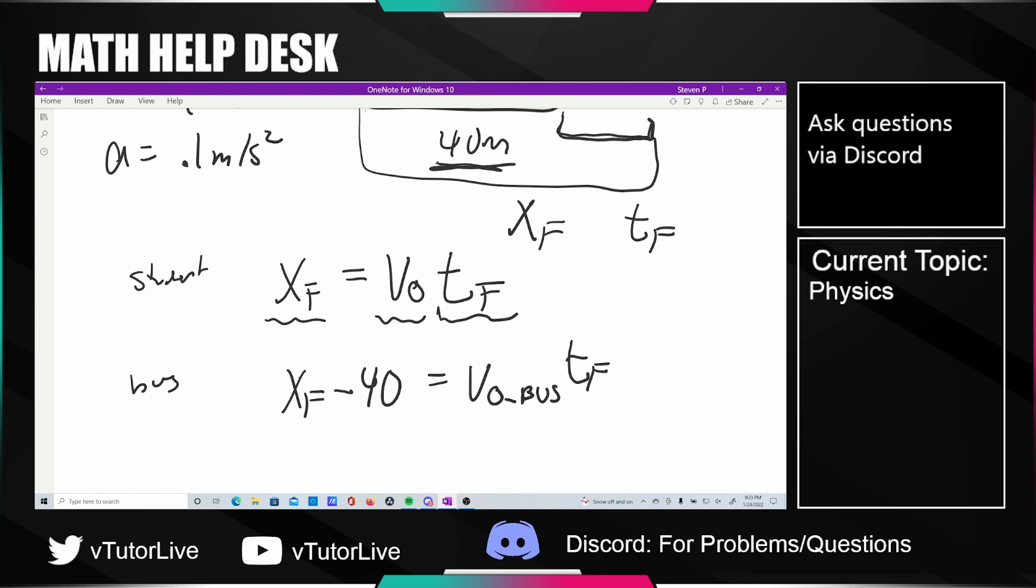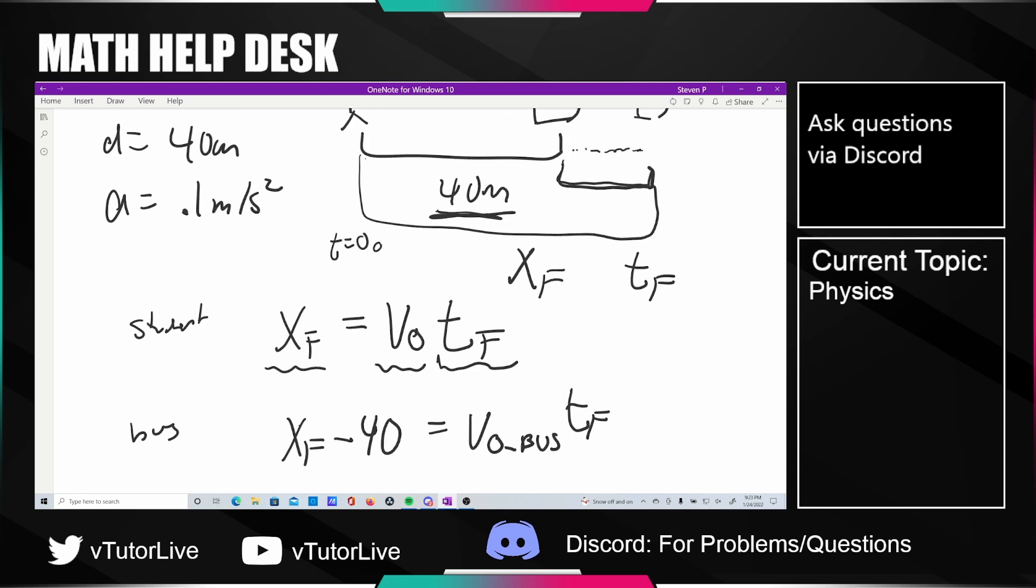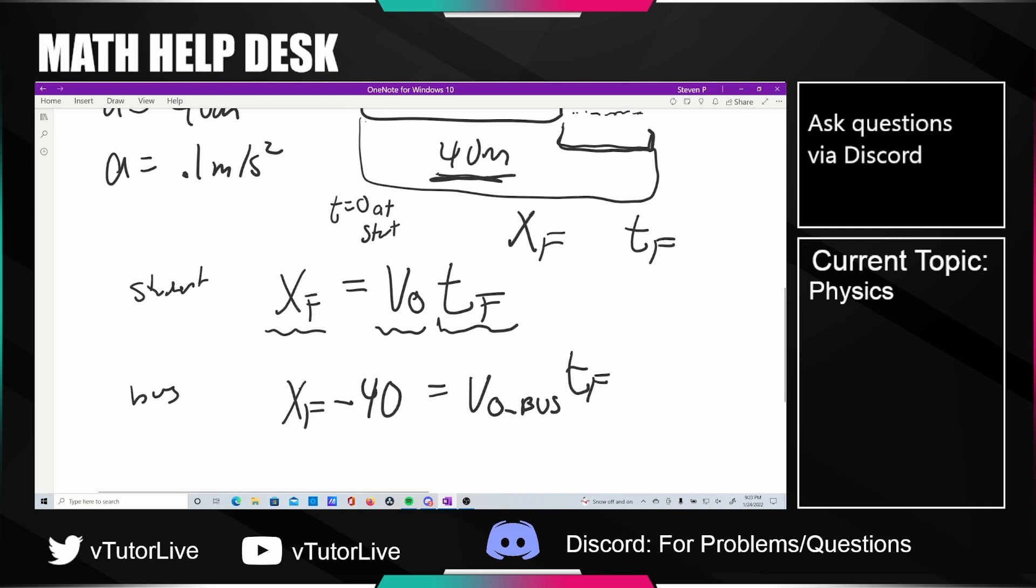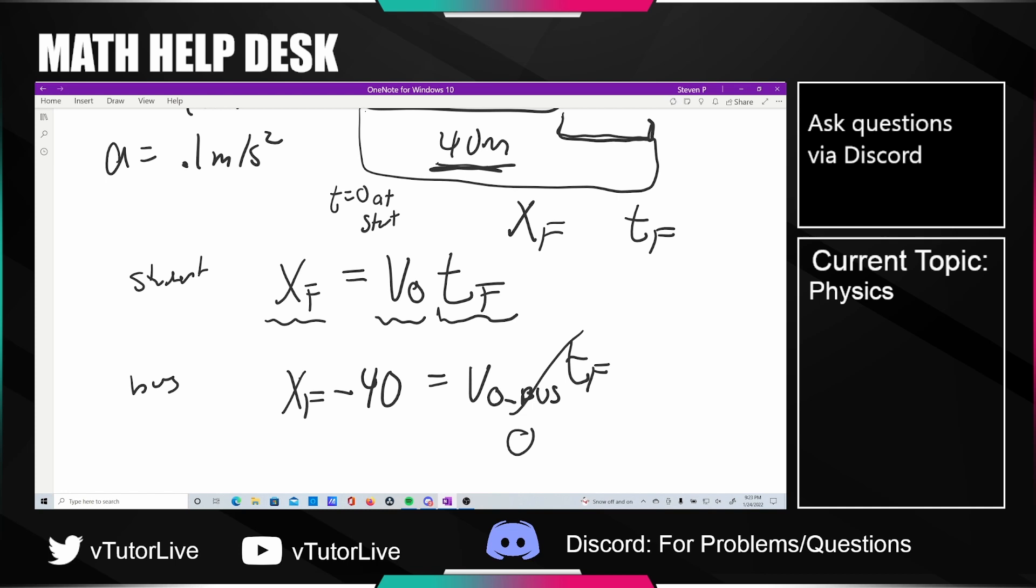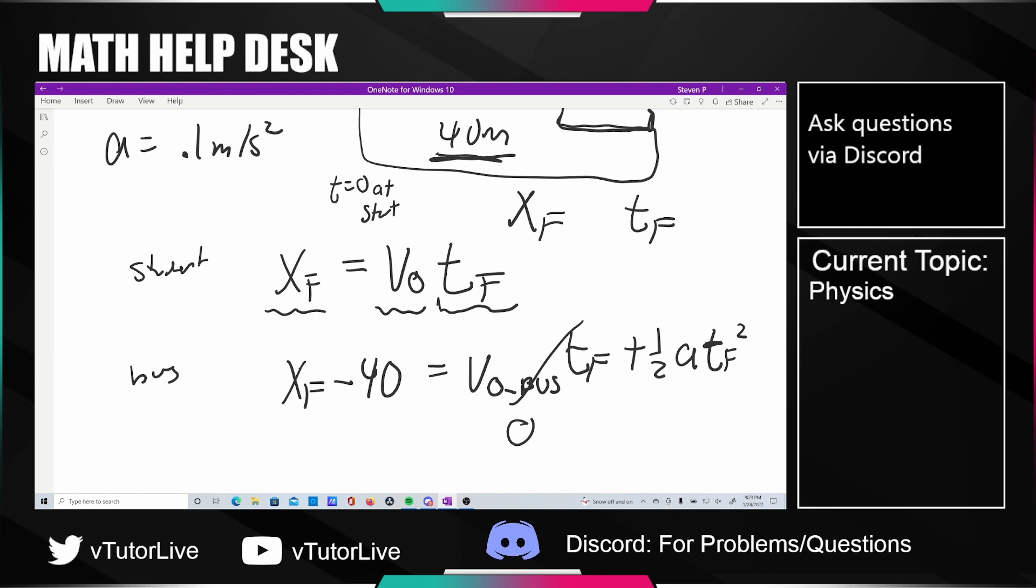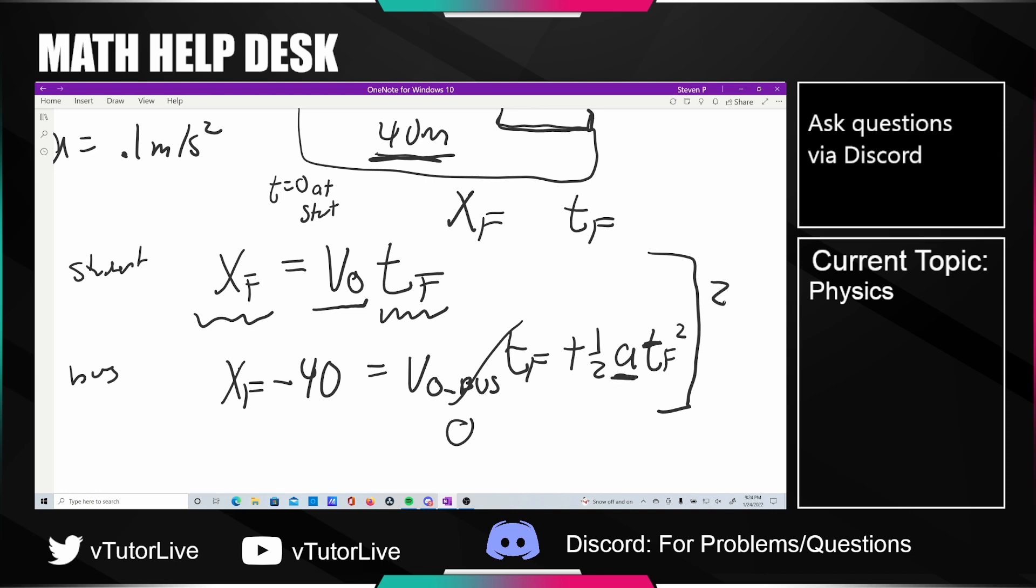Let's say that time t equals zero is the moment the bus starts accelerating. Velocity not of the bus at the start was zero, so then you have to add in one half a t_f squared. At this point we have two equations and two unknowns. We know the velocity V₀ and we know the acceleration, so we have two equations and two unknowns so we can totally solve this.